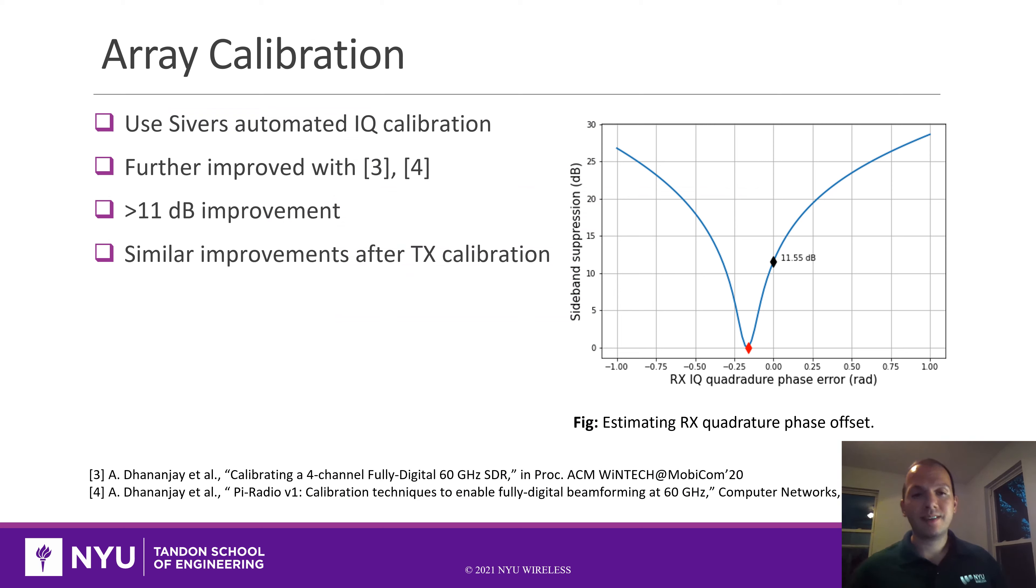One of the first applications that we built is the calibration, which is very important for any application. First, we utilize the automated IQ calibration from Sivers that is utilizing some internal loopback of the array. This can be further improved using methods developed by Aditya. As you can see, just by fixing the receiver phase noise error, we are able to get more than 11 dB in performance improvement.